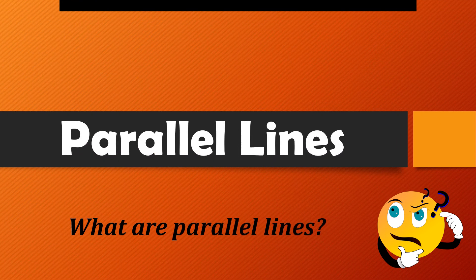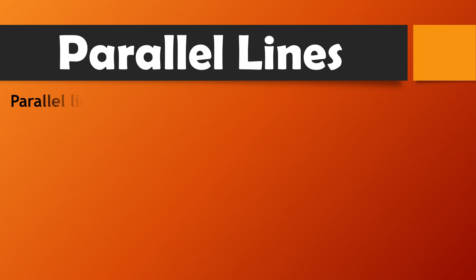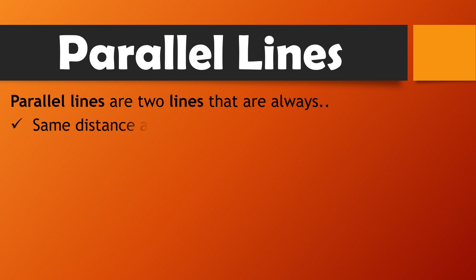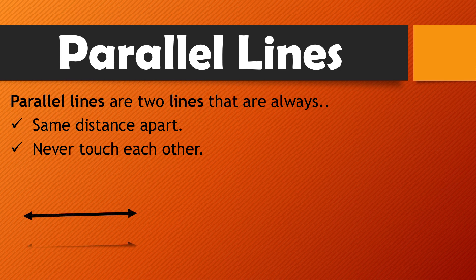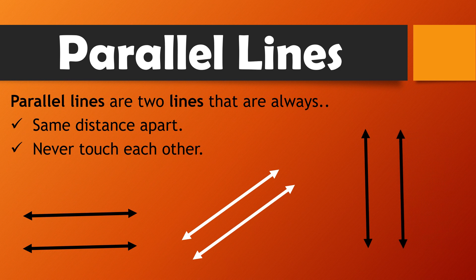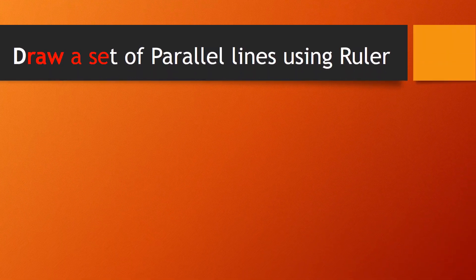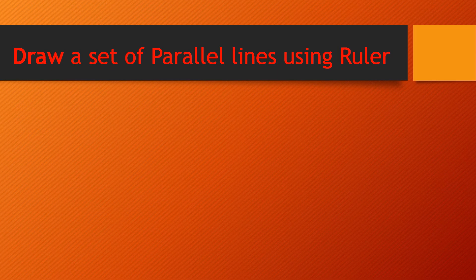Let's learn about what are parallel lines. Parallel lines are two lines that are always the same distance apart and they never touch each other. They can be in any direction like these. These all are parallel lines.